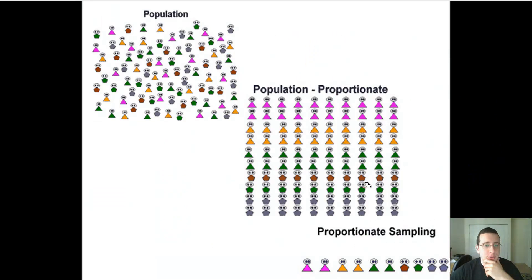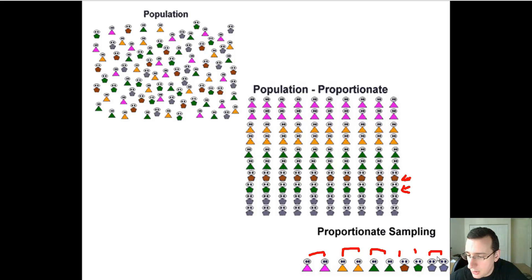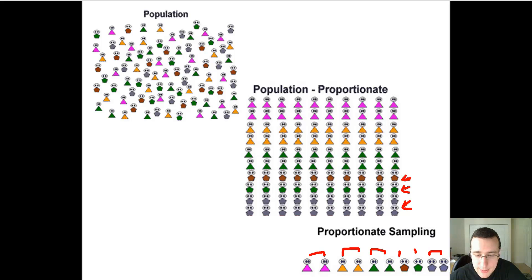There's also proportionate sampling, which is similar to stratified sampling, except that the final sample matches the proportions that existed in the original population. For example, if there's only a small number of one group in the population, that smaller proportion is reflected in the sample. Any one member of a group still had an equal chance of being picked, which is why it is still considered probability sampling — it's still random.